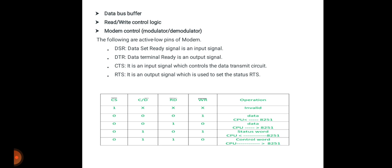The modem control block is also known as modulator/demodulator — a device which converts analog signals to digital and digital to analog, helping the computer communicate over telephone lines or cable wires. The active-low pins of the modem are: DSR — Data Set Ready, an input signal; DTR — Data Terminal Ready, an output signal; CTS — an input signal which controls the data transmit circuit; and RTS — an output signal used to set the status of the RTS line.